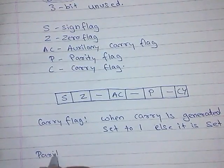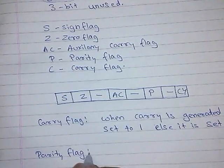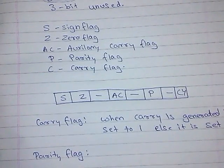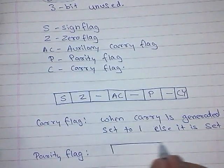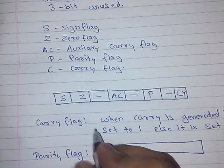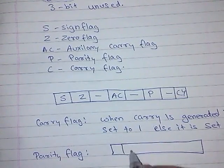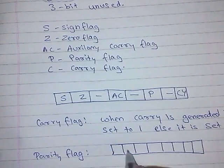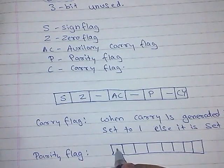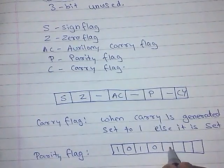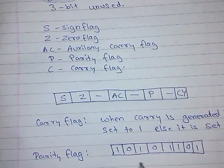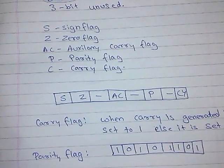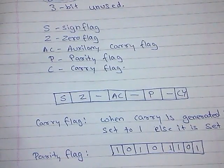Next, parity flag. Whenever the carry flag has odd number of 1s, for example, if this is flag register and it has 1, 0, 1, 0, 1, 1, 0, 1, let's count the number of 1s. This is 1, 2, 3, 4, 5. Therefore, this is odd number of 1s present in this.